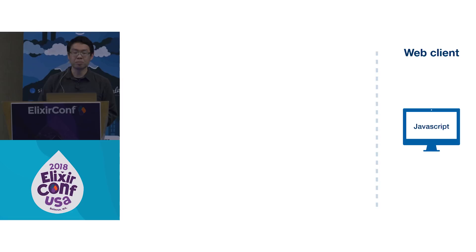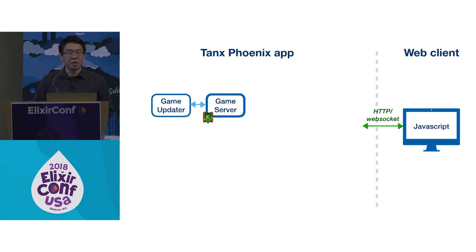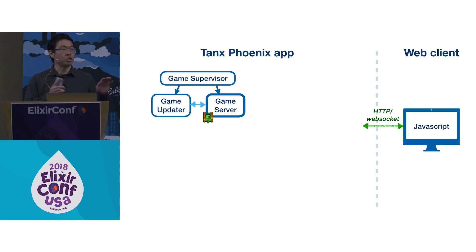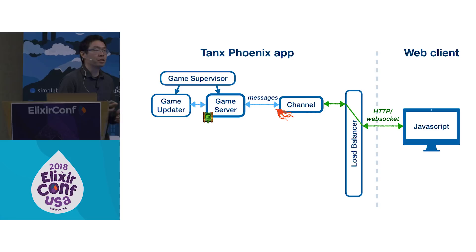Each game is managed by a GenServer that keeps the state of the game. There are a few other processes involved that help run the game and perform simple physics calculations. All these are managed by a supervisor — each game has a supervisor and a few processes. We put Phoenix in the middle of that, with channel processes managing those WebSocket connections. Those go through a load balancer, and the channel exchanges messages with the game. Pretty straightforward, probably a typical Phoenix app, except for maybe one thing.